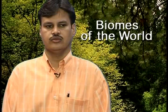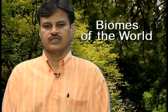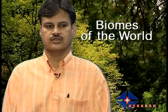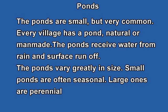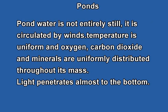Now we move towards the freshwater biomes. We can classify freshwater biomes as streams and rivers, lakes and ponds, and marshes. Ponds are small but very common — every village has a pond, which may be natural or man-made. Ponds receive water from rain and surface runoff, and vary greatly in size, often seasonal. Large ones are perennial ponds. Pond water is not entirely still — it is circulated by the wind, and temperature is more or less uniform with oxygen, carbon dioxide, and minerals uniformly distributed.